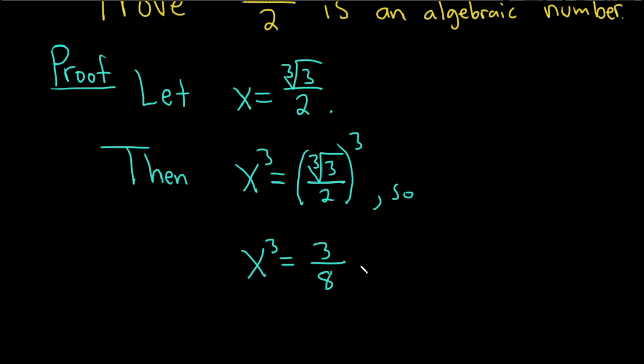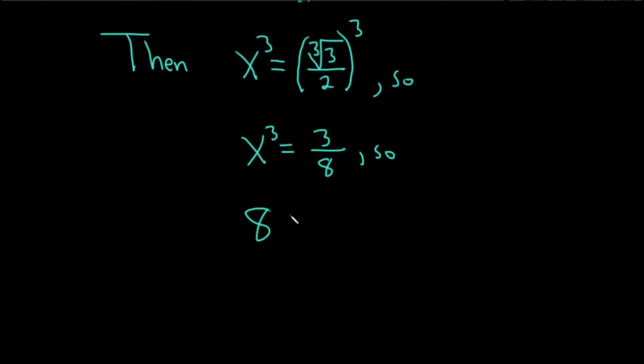Let's go ahead and multiply by 8, so we have 8x cubed equals 3. And then we can subtract 3 from both sides, so we have 8x cubed minus 3 equals 0. So this is a polynomial equation with integer coefficients.